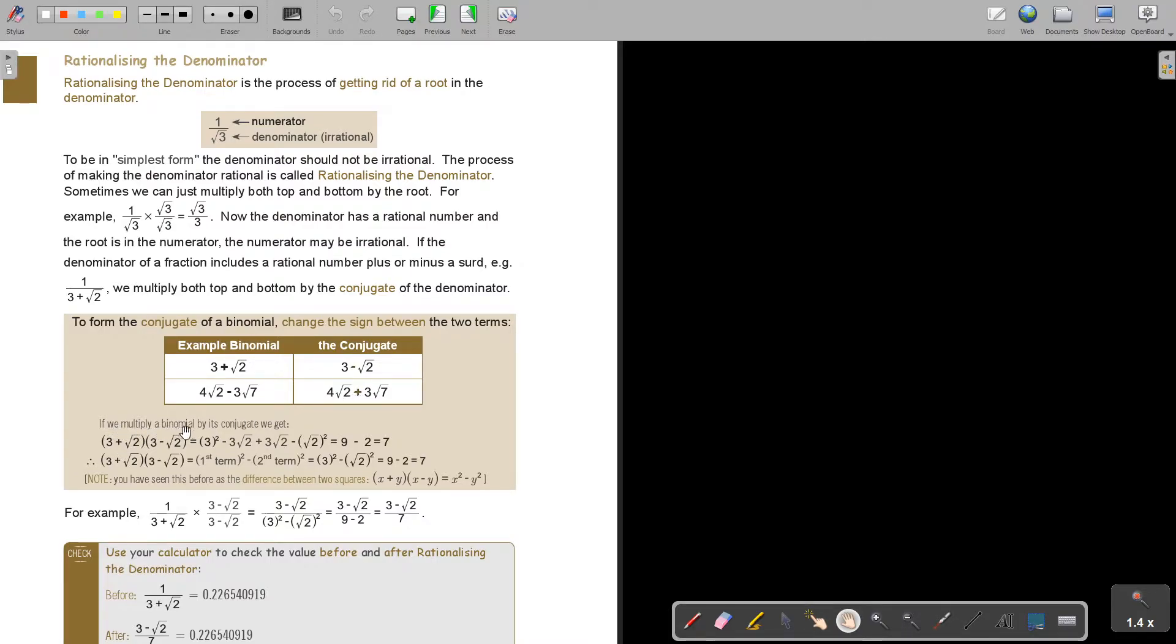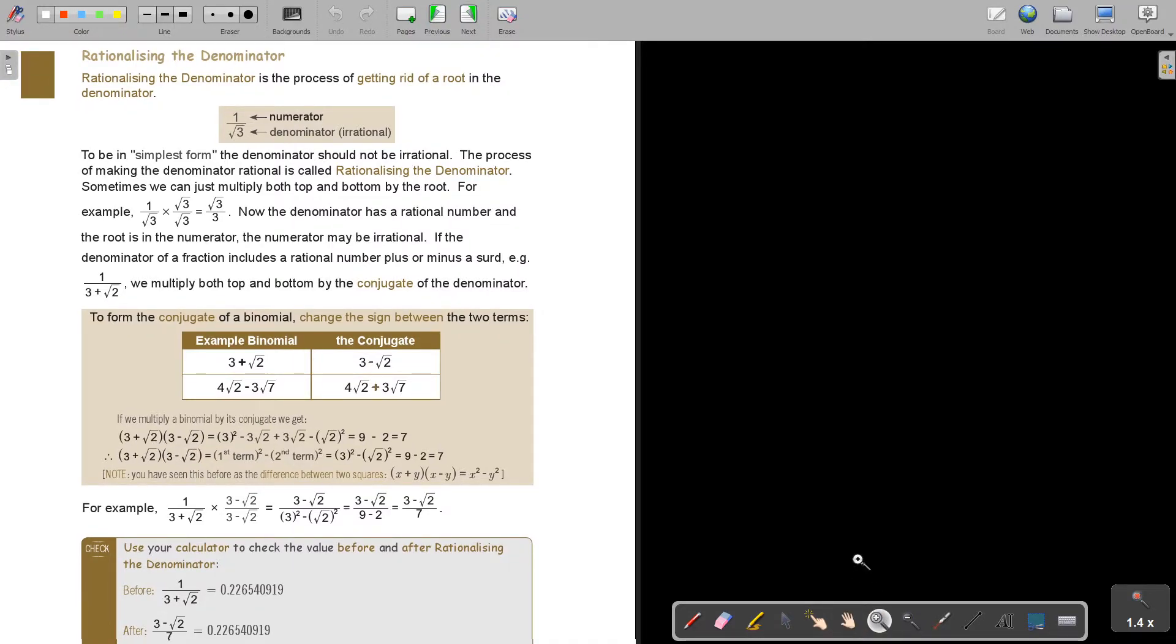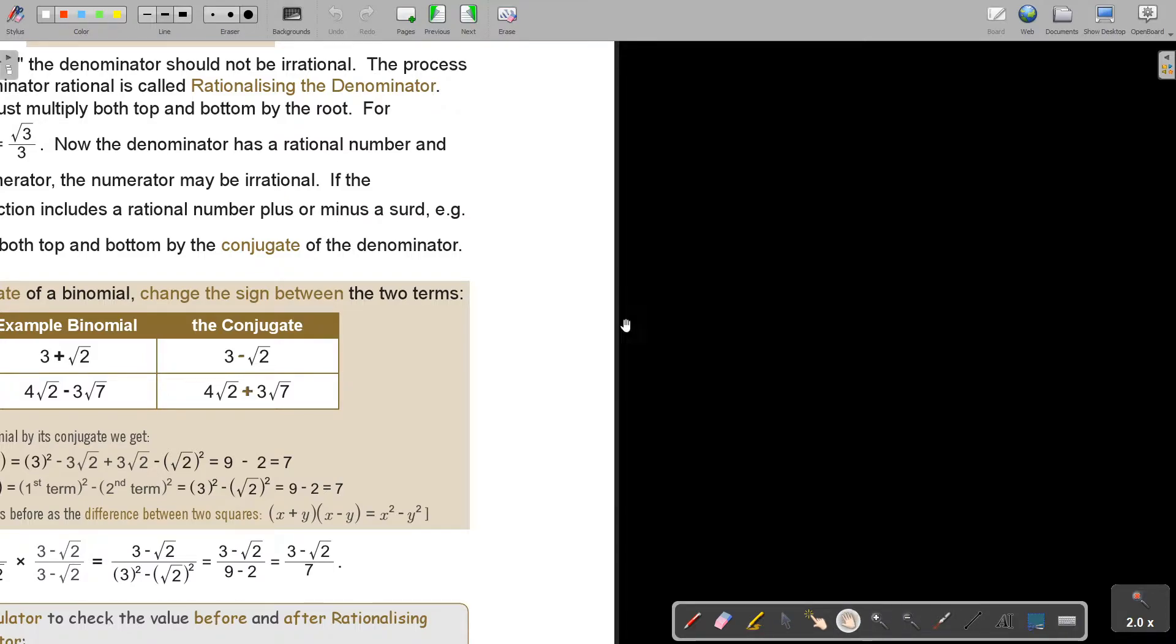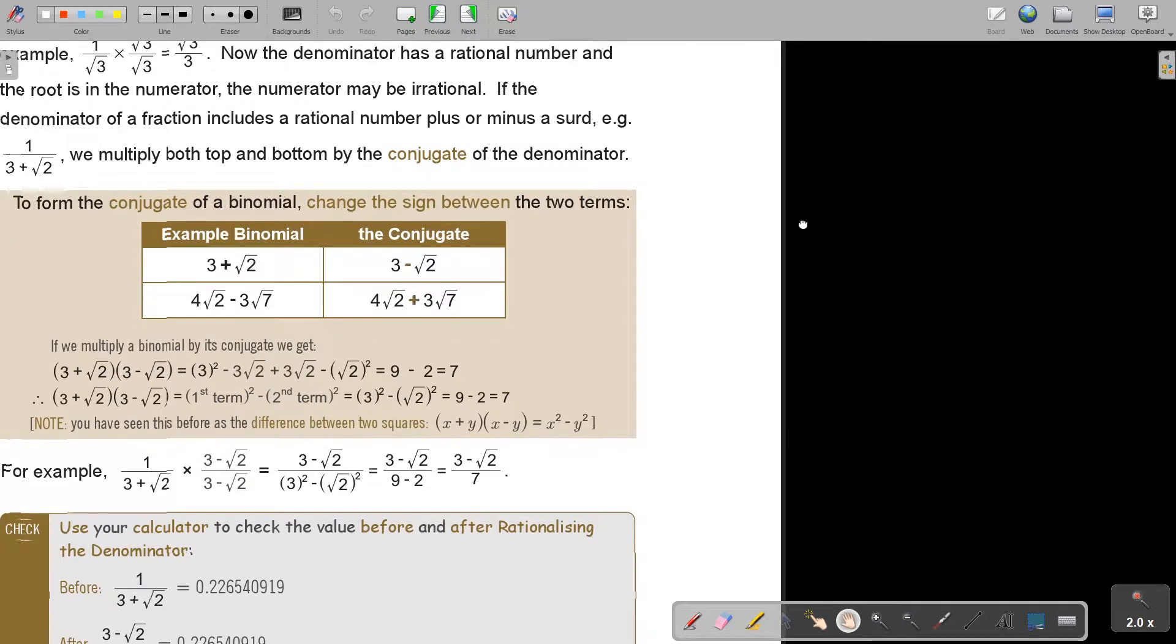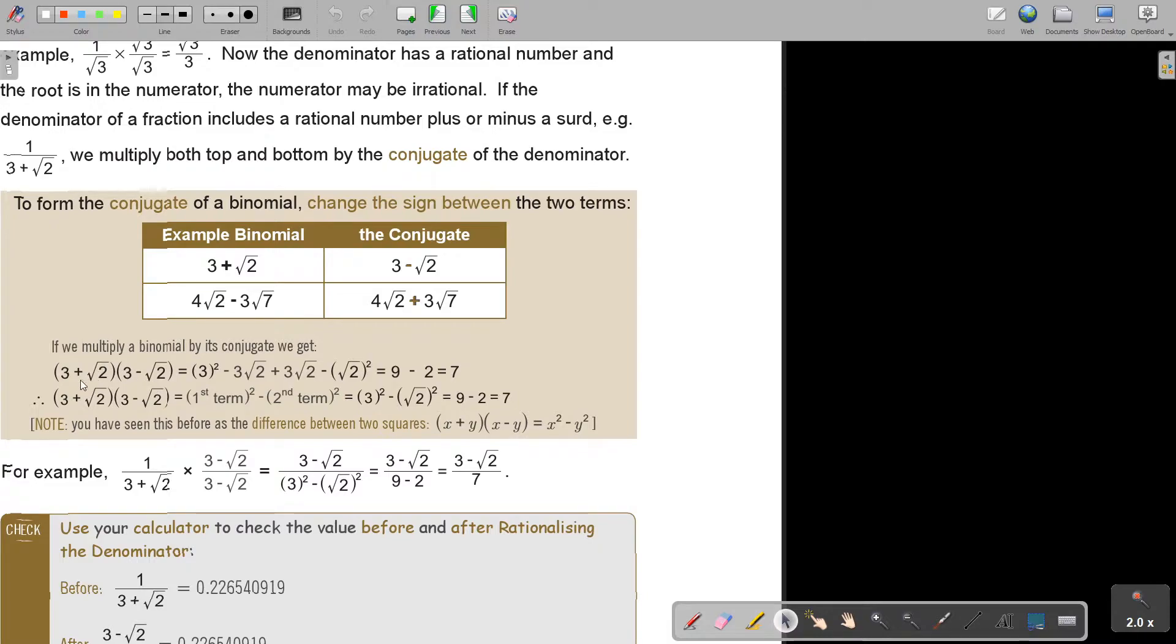If we multiply a binomial by a conjugate then look what happens. If I multiply this I'm going to say 3 times 3 so it's squared and then I'm going to say this times this I get this, this times this I get this, this times this I get negative and I square. But now look what happened. Do you see? This is why I changed the signs. It will cancel. And then I have 9 minus 2 and that will be 7. So if I do this it's the first term I square minus the second term I square. That is basically going to be the answer because the middle terms will cancel out.